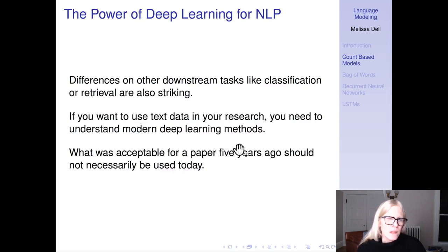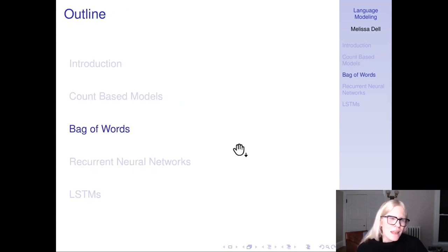Differences on other tasks that we would like to do, like classification or retrieval, are also striking. We'll see an example later in this course on deduplication of noisy text. Even that seems like it should be a pretty straightforward problem, but even there deep learning significantly outperforms n-grams. If you want to use text data in your research, you absolutely need to understand modern deep learning methods. Yet before we get there, I want to talk a little bit more about something you'll see sometimes still used a lot and why we might think that might be problematic, which is bag of words.